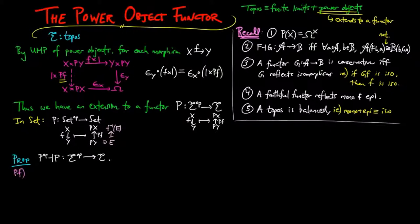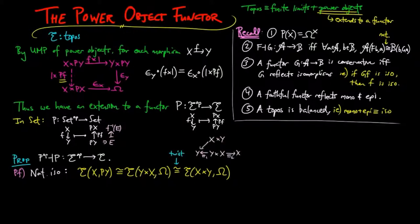This follows from the following string of natural isomorphisms for each pair of E-objects x and y, where the first isomorphism is by exponential adjunction, the second by pre-composition by a twist morphism, which is induced on the product by the second projection and first projection, and the third isomorphism is again by exponential adjunction, and the last isomorphism is by definition of the dual or opposite category.